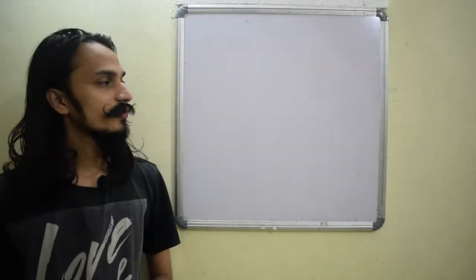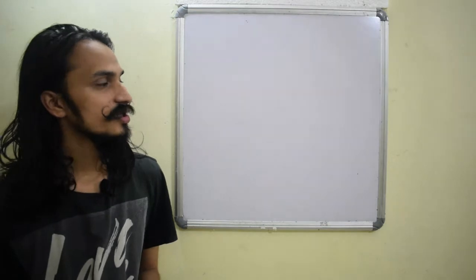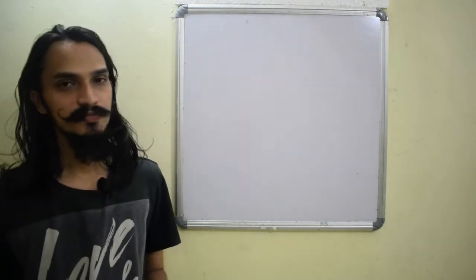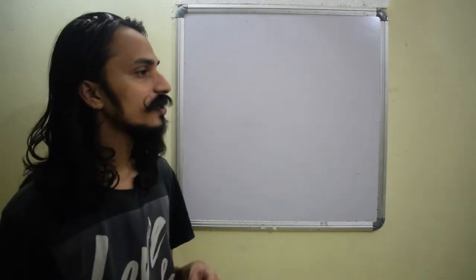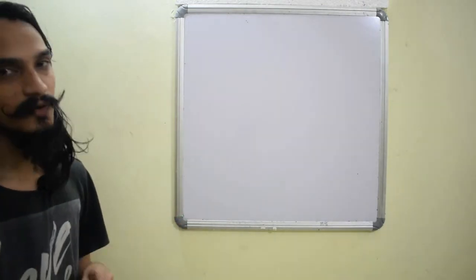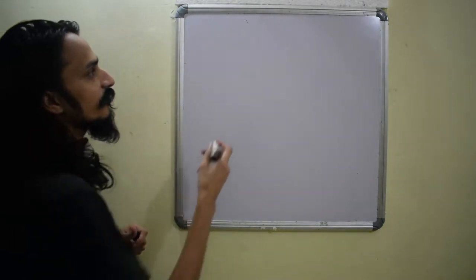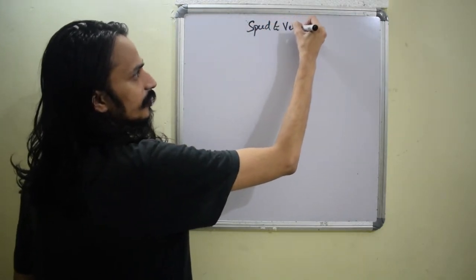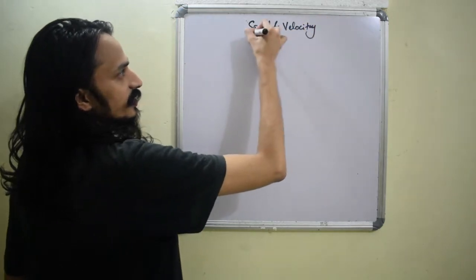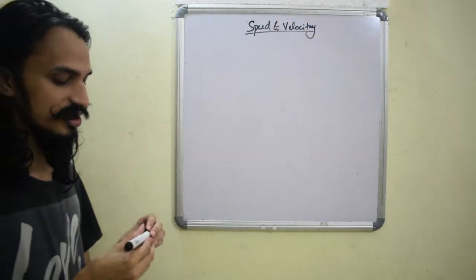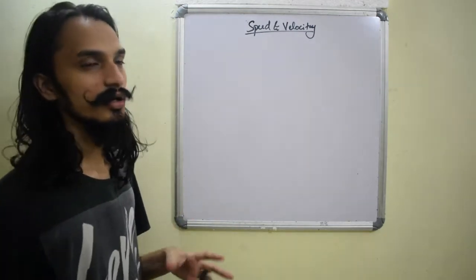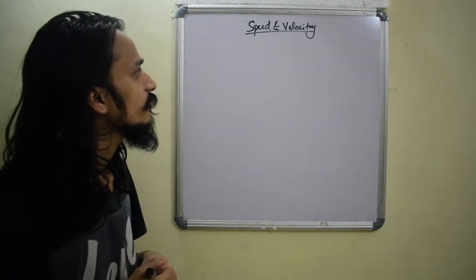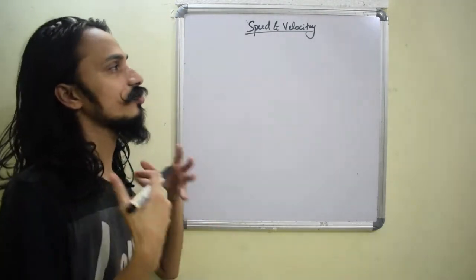So far we have looked at what motion is, and two terms — distance and displacement — and how to find average speed and average velocity. Today we are going to look at just the words speed and velocity. There is a difference between speed and average speed, just like average marks are not the same as your marks in individual subjects.